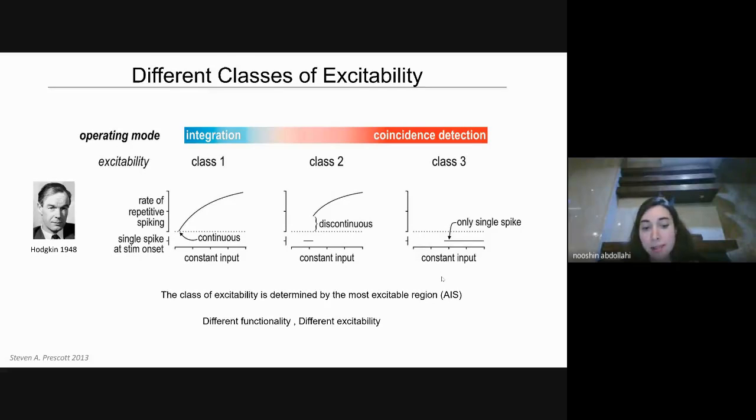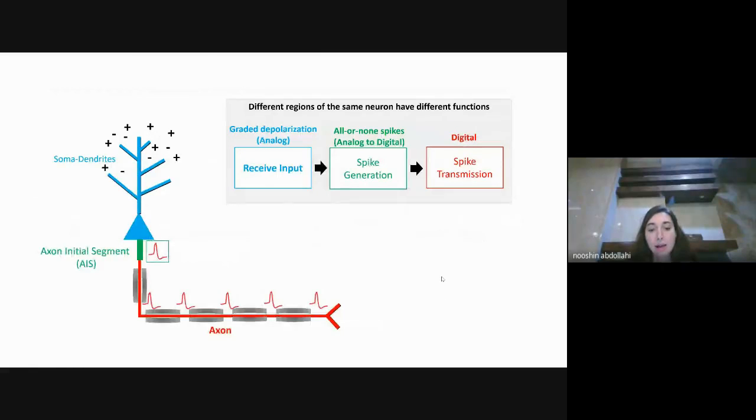Different neurons have different functions in the nervous system, and therefore, they have different classes of excitability. But even different regions of the same neuron have different functions. We know that soma and dendrites are where the neuron receive input. Then, we have axon initial segment, which is the site of a spike generation. And then, axon is to transmit spike.